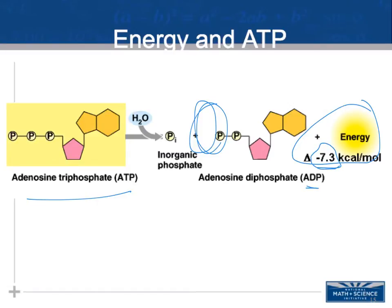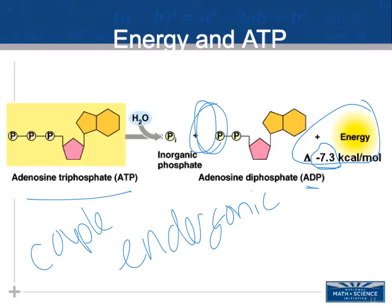That released energy can be coupled with an endergonic reaction. By coupling this exergonic reaction with an endergonic one, I can use the energy from breaking ATP to fuel the endergonic reaction, making it overall exergonic and energetically favorable. So if my first reaction is endergonic and not favorable, coupling it with ATP hydrolysis makes the net reaction exergonic, so it will occur.